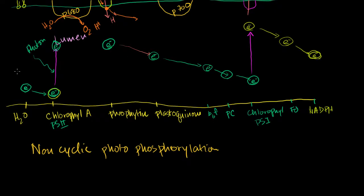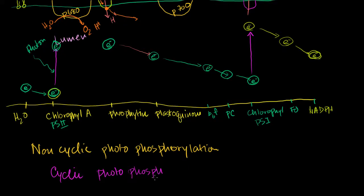There's another type of photophosphorylation — you might guess what it's called. That's called cyclic photophosphorylation. You will see when we study the Calvin cycle — the dark reactions or light-independent reactions — that it uses a lot of ATP, actually ATP in disproportionate amount to the NADPH it uses. It uses both, but it uses a ton of ATP. So cyclic photophosphorylation only produces ATP and actually does not oxidize water.